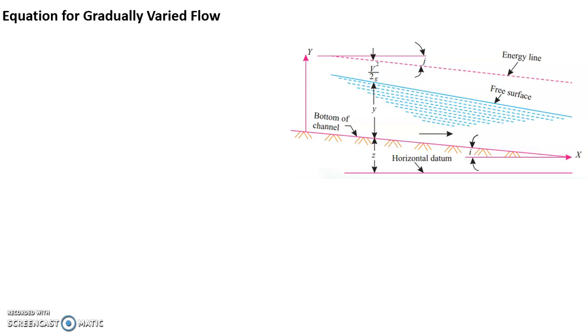So if at all I need to write an equation for the energy, I have only one option that is E equals to Z plus Y plus V square by 2g, the classical Bernoulli equation. Now what I will do is I just identify the variation of energy in X axis. So the variation of energy in X axis is DE by DX. You differentiate the earlier equation with respect to X.